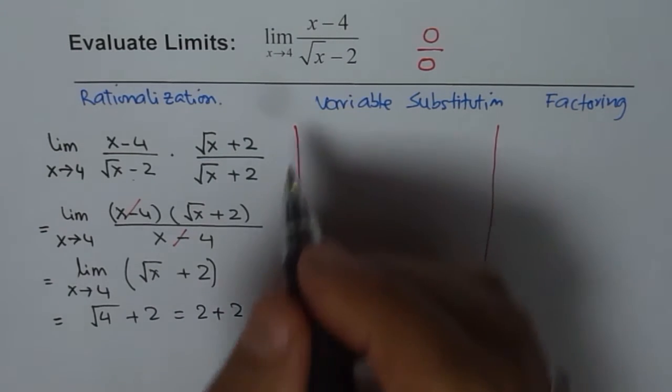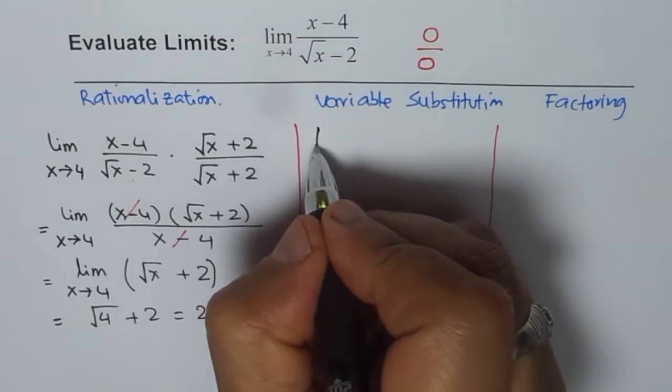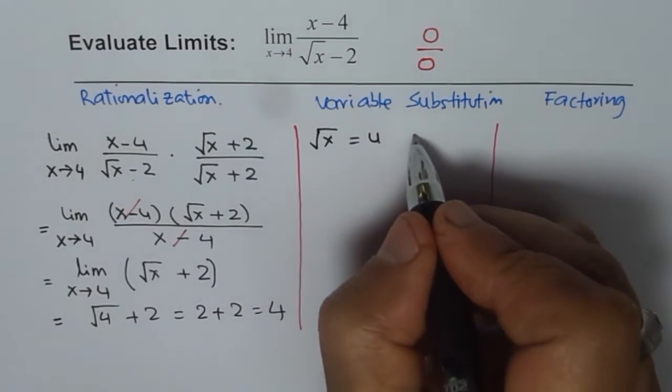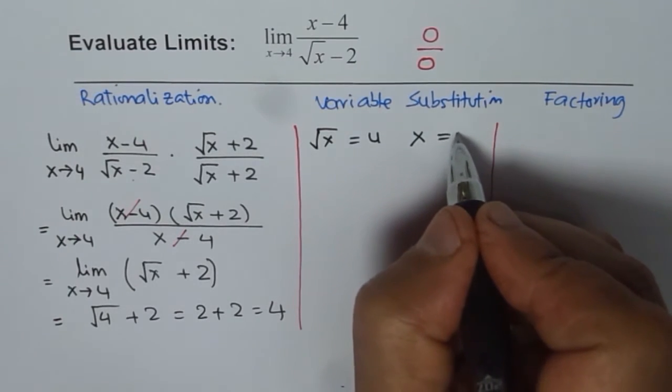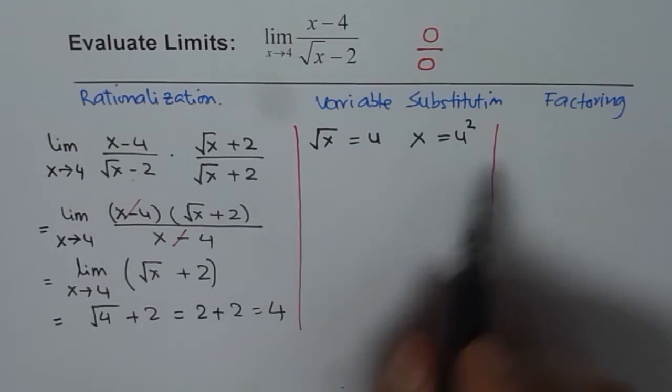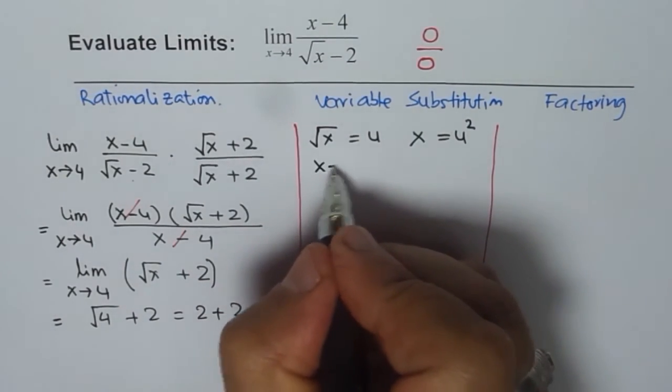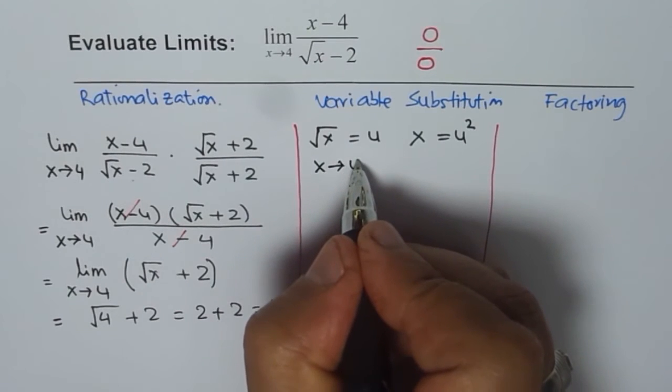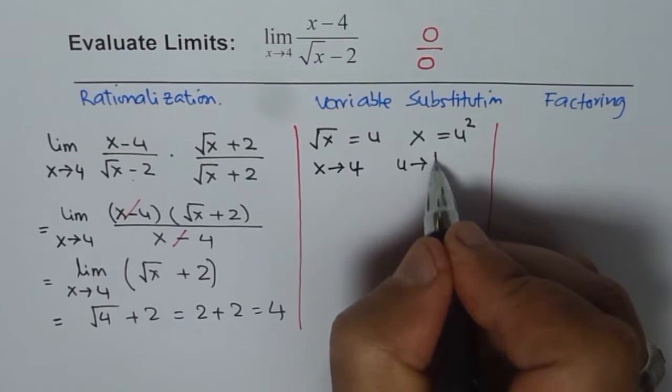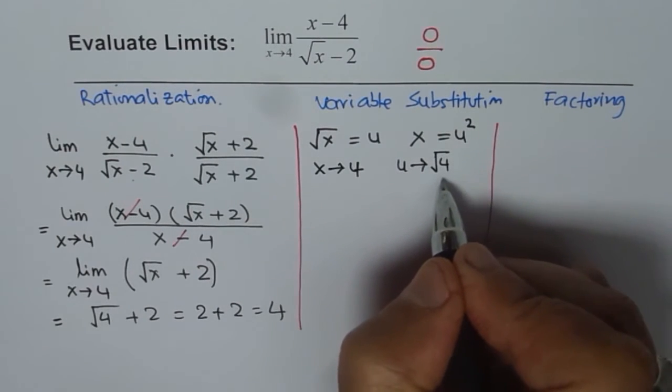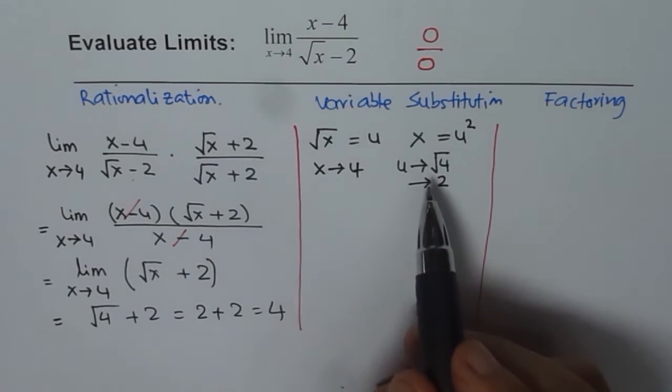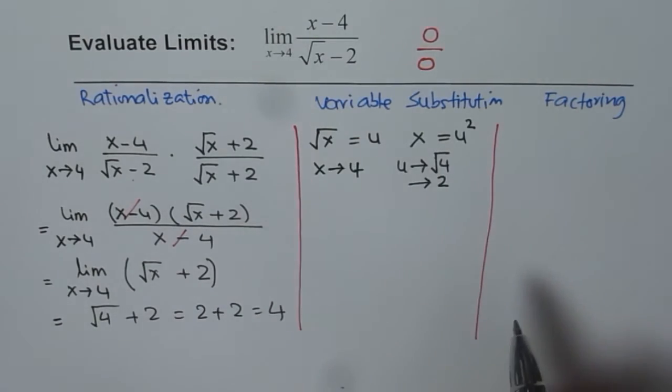Now let us see how to apply variable substitution method in this case. For variable substitution, let us substitute square root of x as u. In that case x will be equal to u squared. So first it is about the variable, now the limits. As x approaches 4, what happens to u? u approaches square root of 4 which is 2.